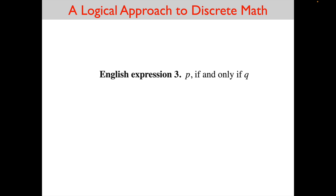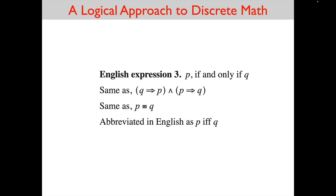Combining these: 'P if and only if Q' is the same as 'P if Q' and 'P only if Q.' 'P if Q' gives Q implies P, and 'P only if Q' gives P implies Q. So it means both Q implies P and P implies Q, which is the same as equalveils. The common abbreviation is IFF, meaning 'if and only if,' which means equalveils and means P implies Q and Q implies P.